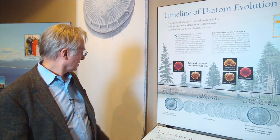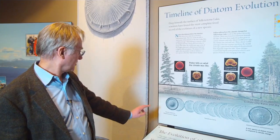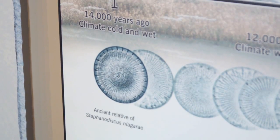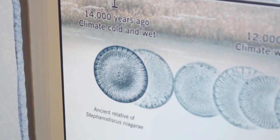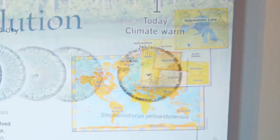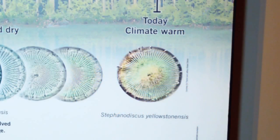If you look in ponds widespread over the United States, you'll find a diatom called Stephanodiscus niagara. It's very, very common. If you look in Yellowstone Lake, you'll find a unique species which is only found there, Stephanodiscus yellowstoneensis.